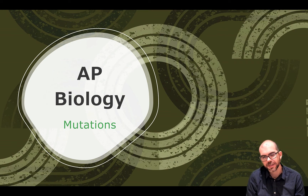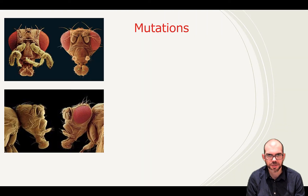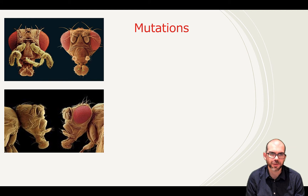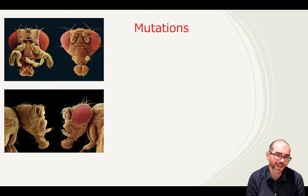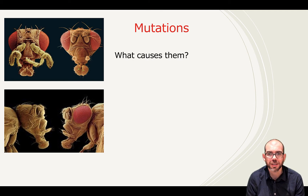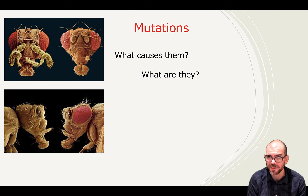Hi everyone. This lesson is an introduction to mutations. Let's start by looking at a couple of mutations. On the top, you can see one fly has antennae and one fly doesn't. You can also see that one fly has an eye and another one doesn't. As we go through mutations, I want you to keep in mind what's causing this.